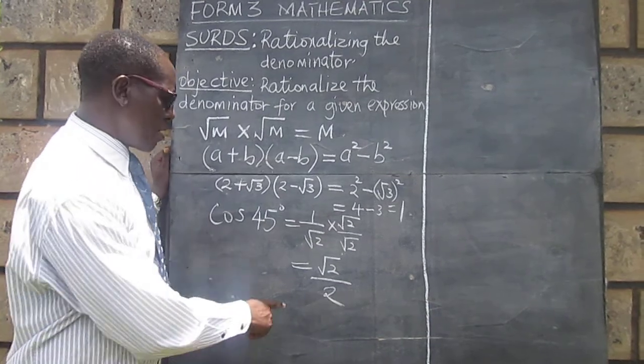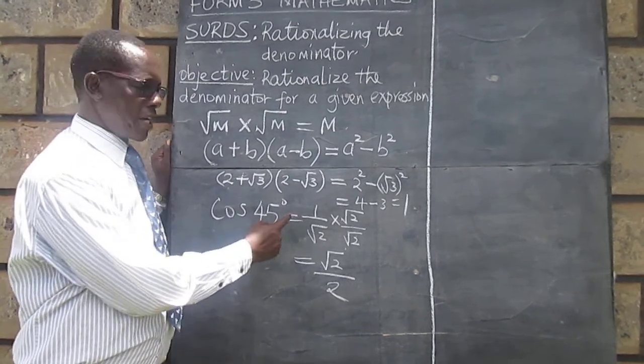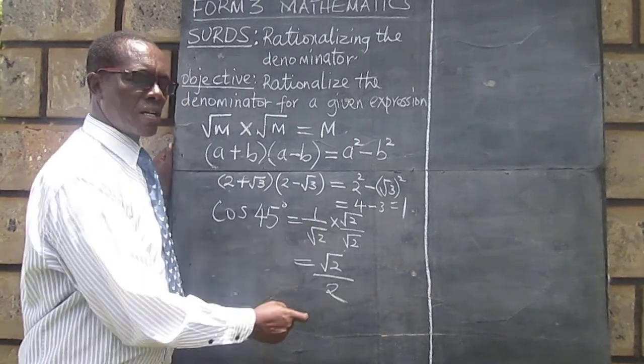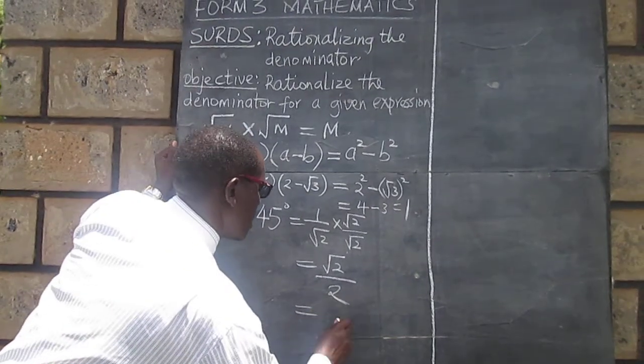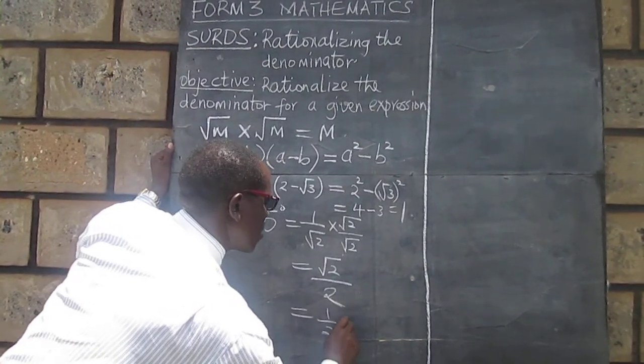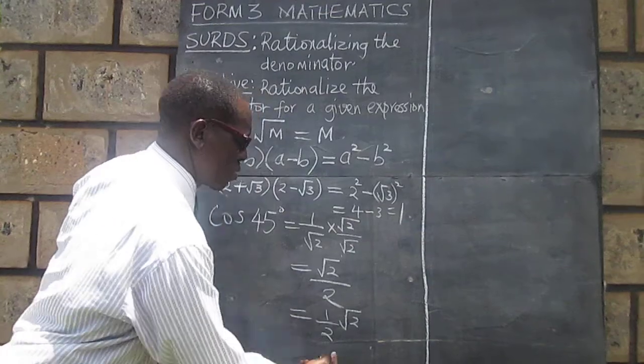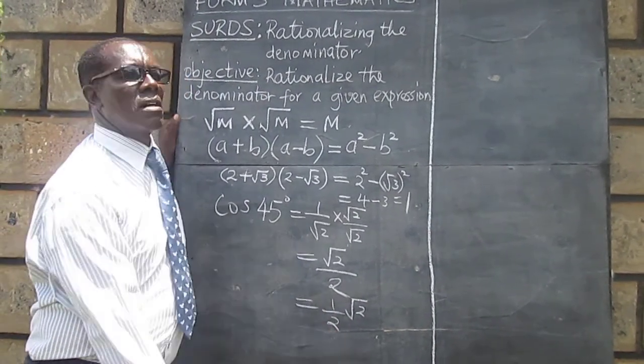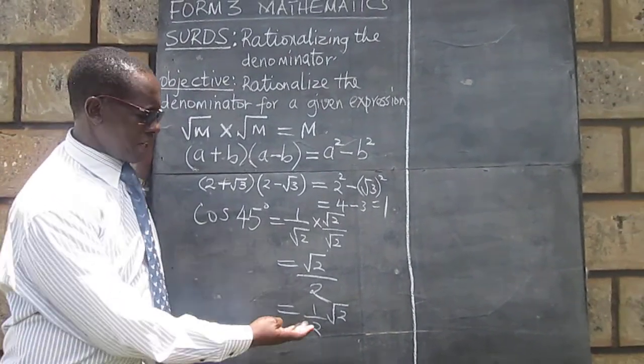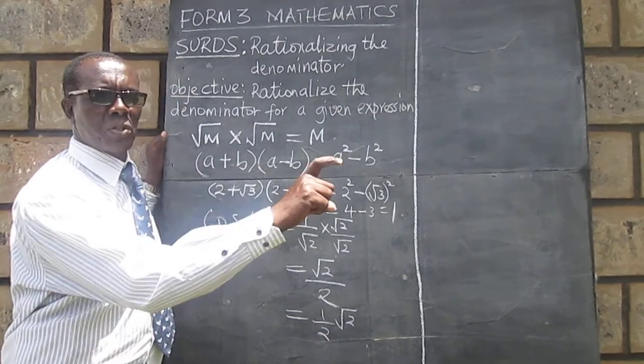Therefore another way of writing cos 45 equal to 1 over root 2 would be a half of root 2 when the denominator has already been rationalized. So to rationalize is actually to make the denominator rational.